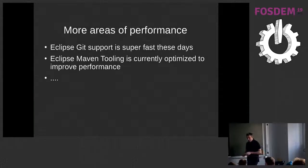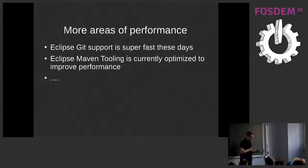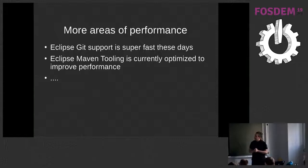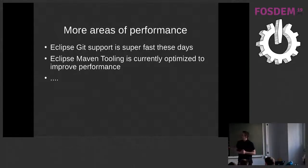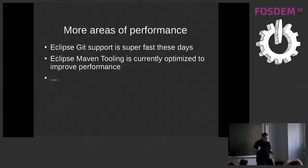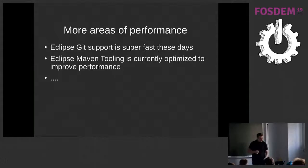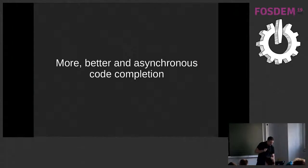There are other areas of improvement. For example, Red Hat is now working on the Maven tooling together with the Apache project to bring in much better Maven tooling support. Also, the Git tooling has been super fast these days — they're basically doing everything asynchronously now, not blocking the UI anymore. So it's really hard these days with the latest Git support in Eclipse to get a UI freeze from the Git tooling. Carsten will be talking about what the project did in the past to improve performance.